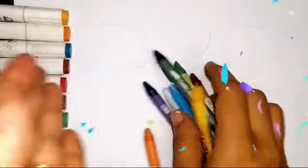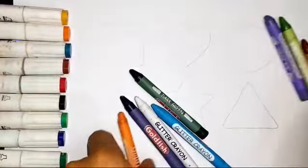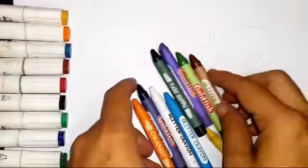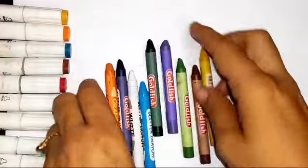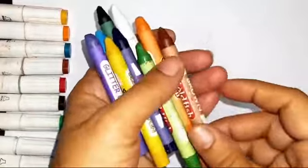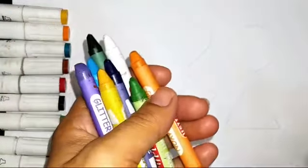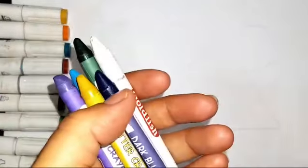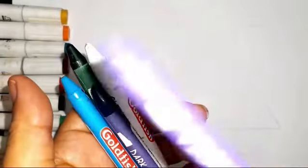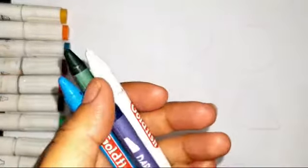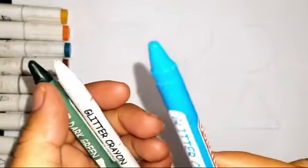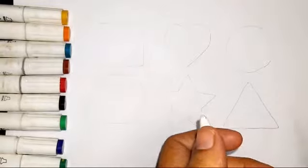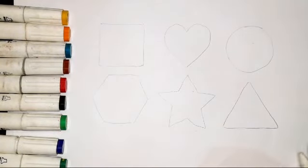Hi everyone, today we learn some shapes. First we learn colors names: brown color, orange color, green color, yellow color, violet color, dark blue color, sky blue color, green color, white color.